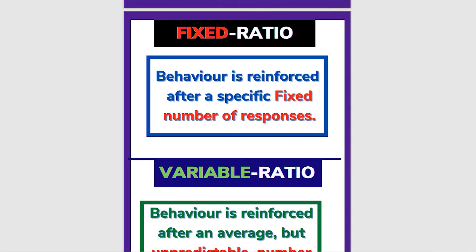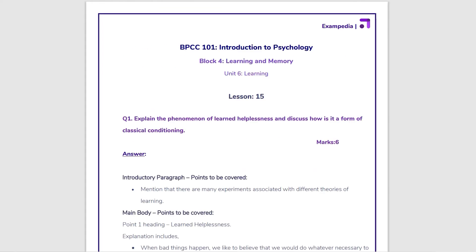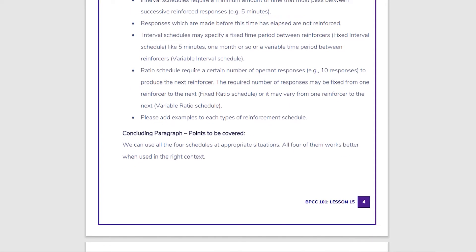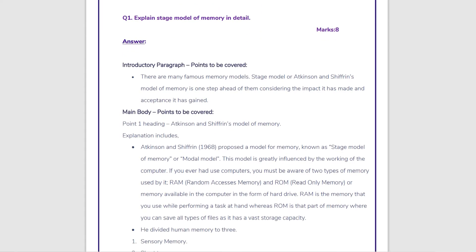So we have four types of schedules of reinforcement. These four types can be tested. You can define operant conditioning and schedules of reinforcement, split by interval or ratio basis.